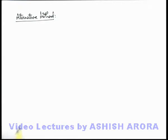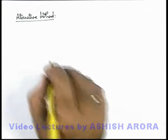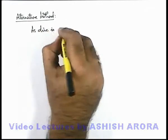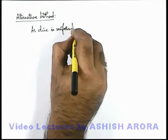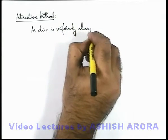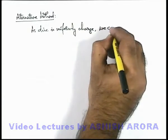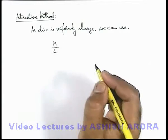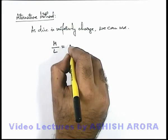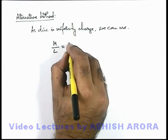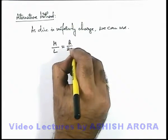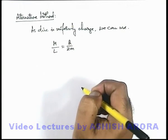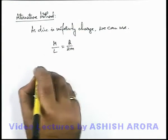Let us solve the same problem by an alternative method. Here we can write, as disc is uniformly charged, we can use the concept that the ratio of magnetic moment to angular momentum for uniformly charged body is always a constant which is written as q by 2m, where q is the uniformly distributed charge on body and m is the mass of body. So from this expression we can say magnetic moment of disc can be directly given as M is equal to q by 2m multiplied by the angular momentum.